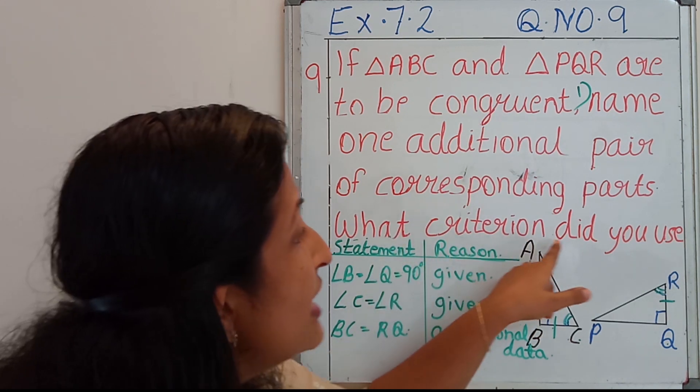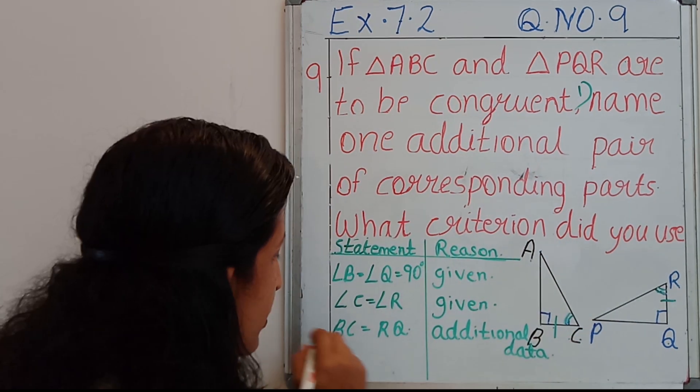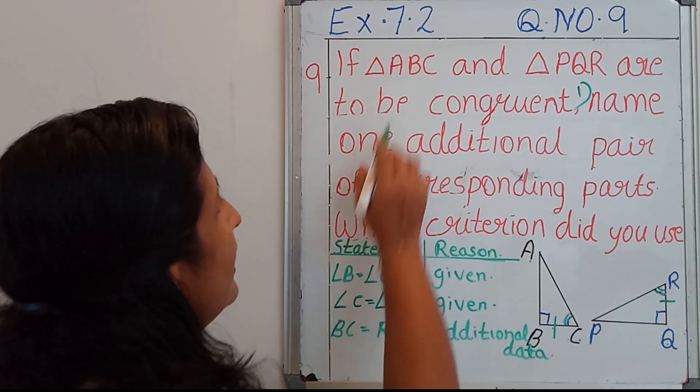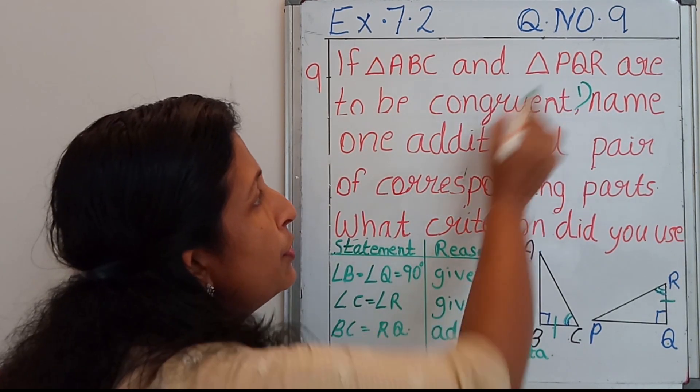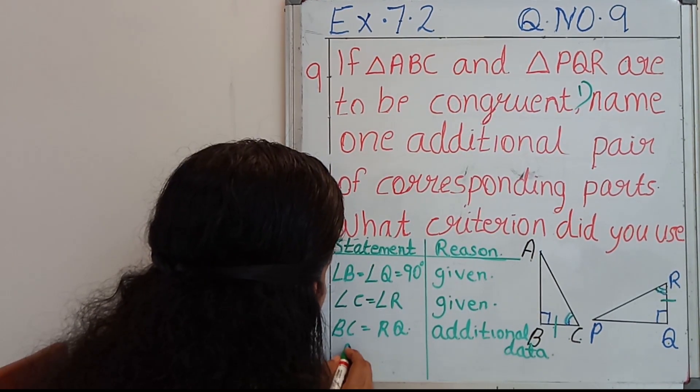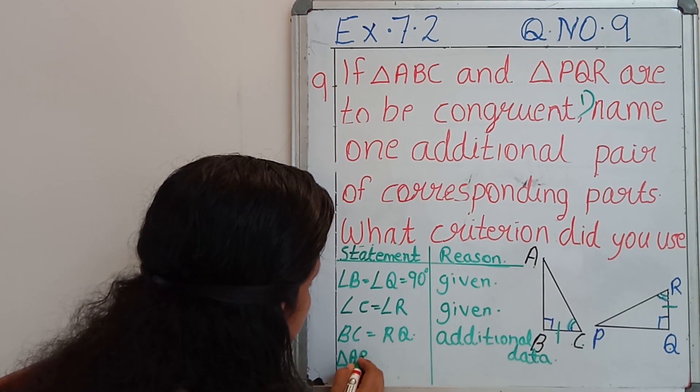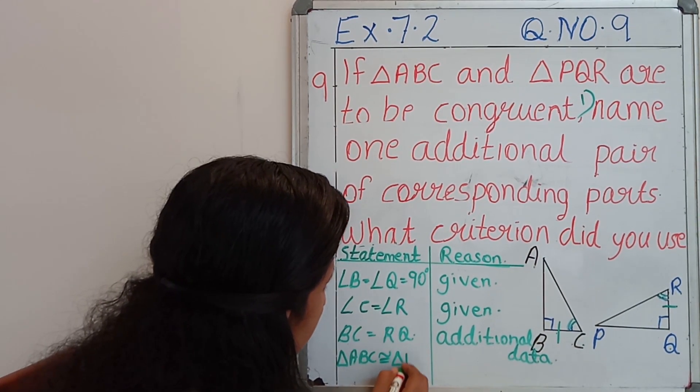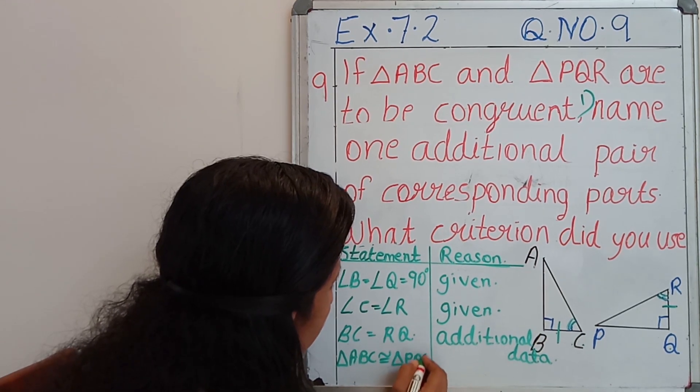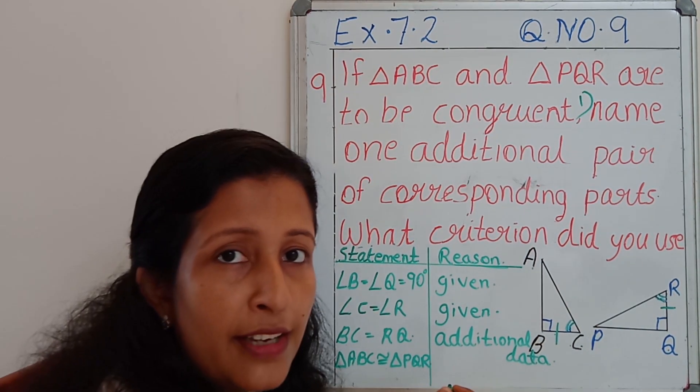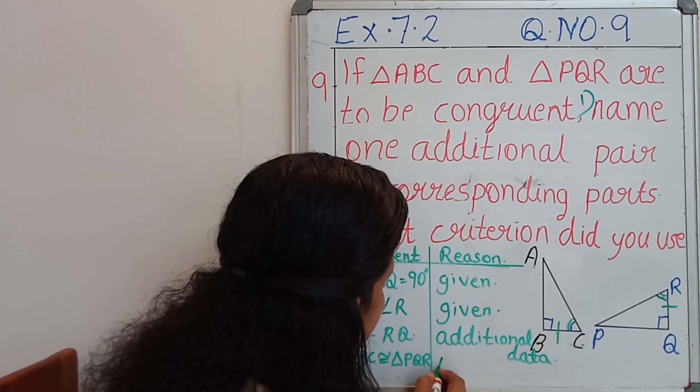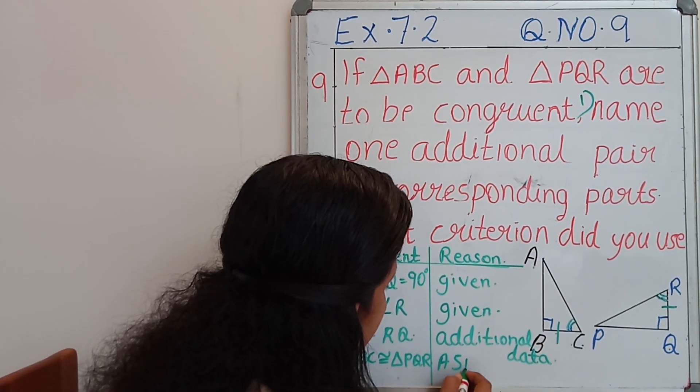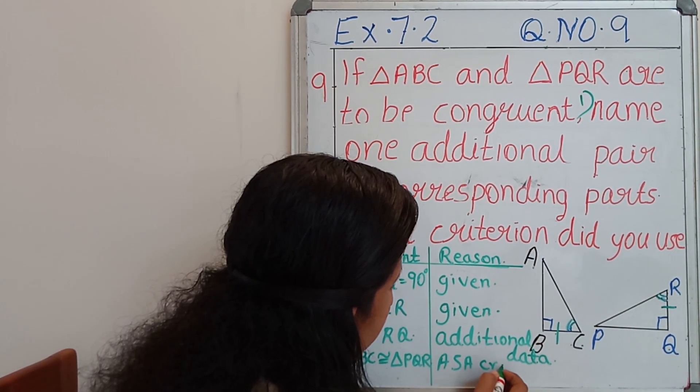Then what criterion did you use? Triangle ABC congruent to triangle PQR. Triangle ABC is congruent to triangle PQR. Why? By using ASA criteria.